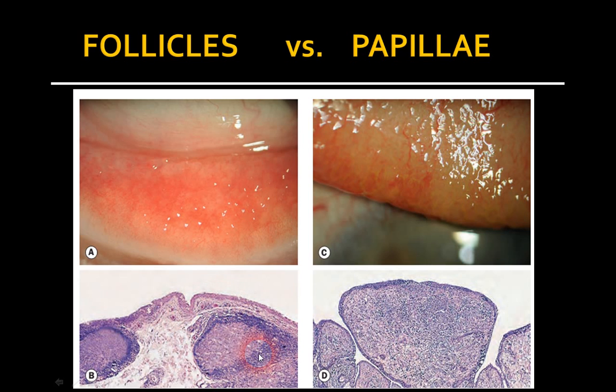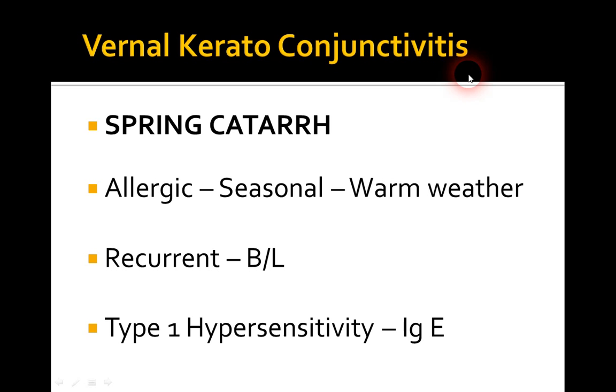Speaking of follicles, follicles are nothing but lymphoid aggregations. You can observe the germinal centers in this histology picture. What are papillae? Papillae, on the other hand, are not lymphocytes — rather they are hypertrophied epithelium of conjunctiva with a fibrovascular core. So follicles are lymphocytes; papillae are hypertrophied epithelium with a fibrovascular core. There is some stromal infiltration also, but essentially they are epithelium.